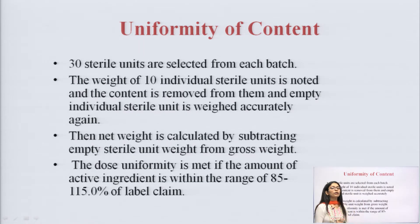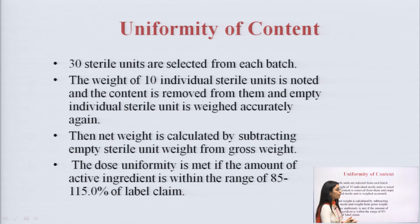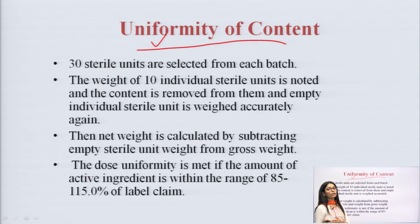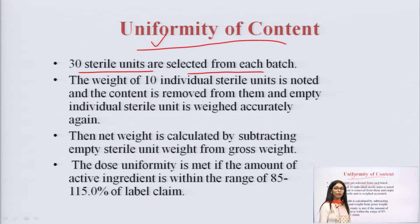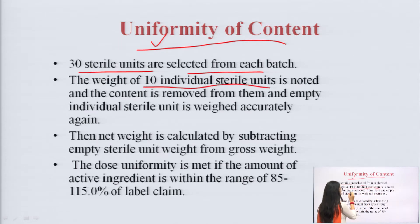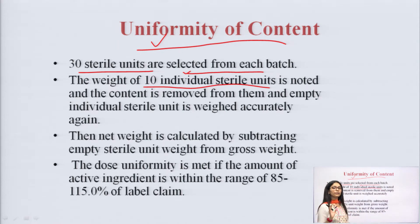Uniformity of content — from the name it suggests that all the ampoules or vials are uniformly filled. It is equal in all the particular formulations. Thirty sterile units are selected from each batch, as per IP — Indian Pharmacopoeia, our standard reference book. The weight of 10 individual sterile units is noted and the content is removed.